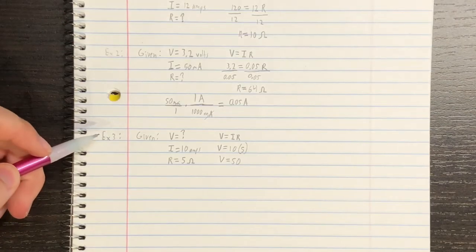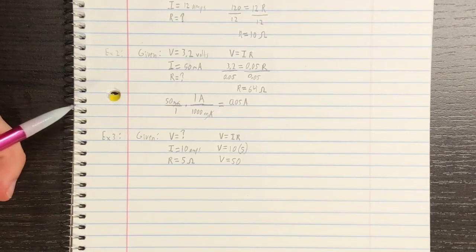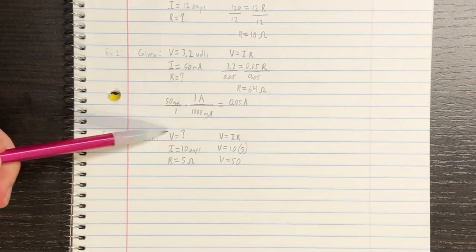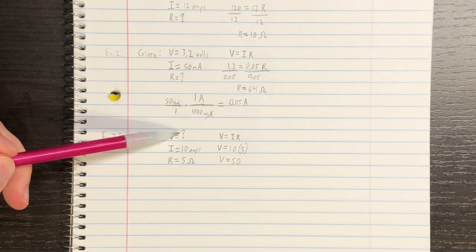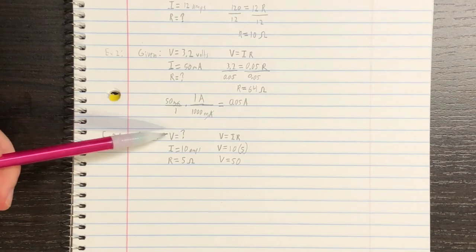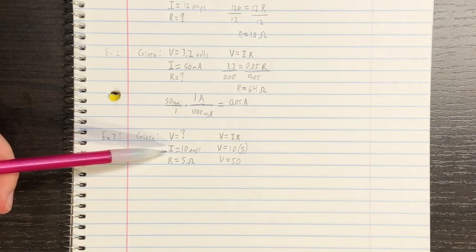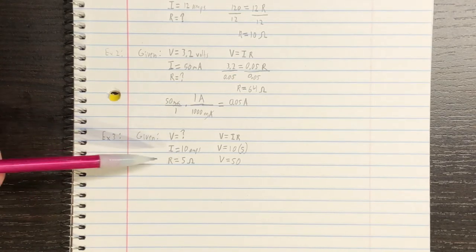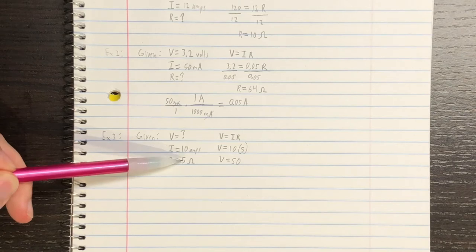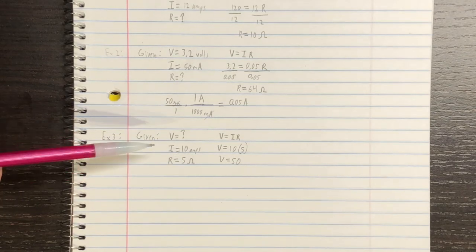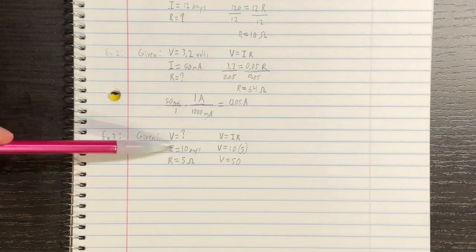For our next problem, let's say we need to find the voltage across a resistor. So, for our givens, the voltage, we don't know. So, we just write down a question mark because this is what we are solving for. For amperage, let's just say there are 10 amps passing through the resistor. And then, we know that the resistor is a 5 Ohm resistor. So, using Ohm's Law, we can actually find the voltage across the resistor.